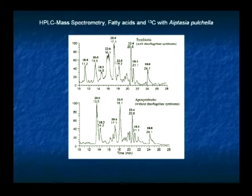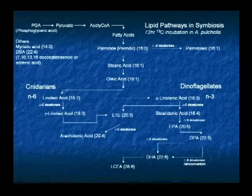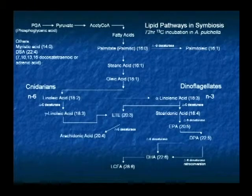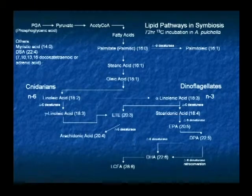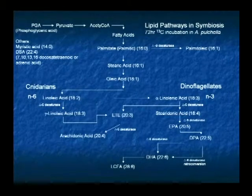Going back to the comparison between aposymbiotics and symbiotics, we can ascertain what those products are using these techniques. Once we've done that, we can put them into a framework of known lipid pathways or synthesis pathways and actually understand where those components fit within the pathway and how that corresponds to the actual productivity of the symbiosis. Based on known pathways, we can actually disseminate where those products are likely to be generated and what the end products are going to result in.